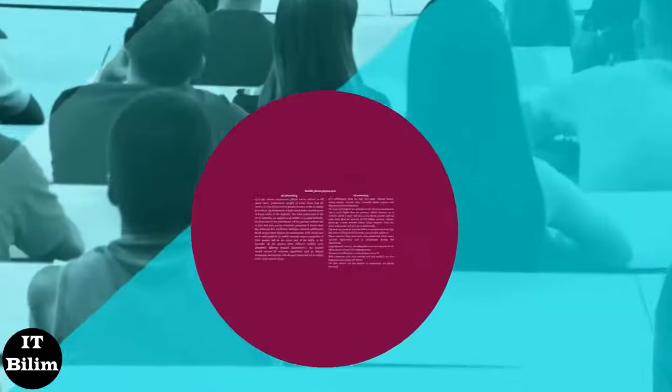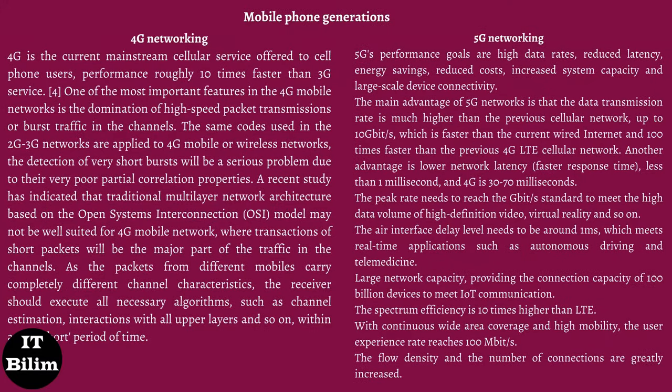Mobile phone generations: In the early 1980s, 1G was introduced as voice-only communication via brick phones. Later in 1991, the development of 2G introduced short message service (SMS) and multimedia messaging service (MMS) capabilities, allowing picture messages to be sent and received between phones. In 1998, 3G was introduced to provide faster data transmission speeds to support video calling and internet access. 4G was released in 2008 to support more demanding services such as gaming services, HD mobile TV, video conferencing, and 3D TV. 5G technology has been planned for the upcoming future.